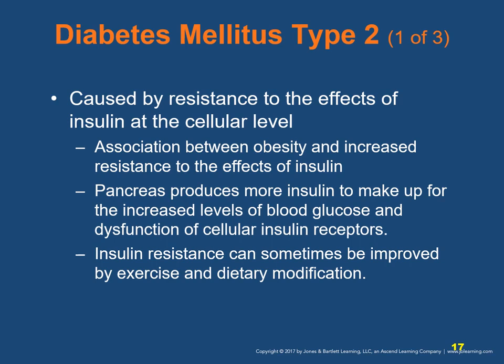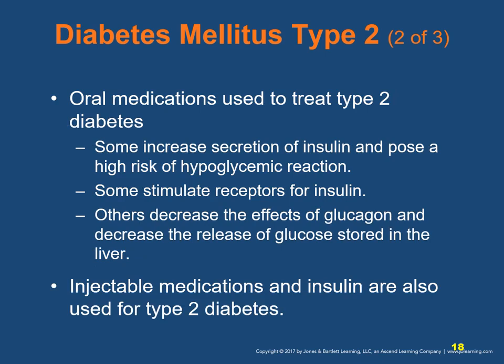Diabetes mellitus type 2 is caused by resistance to the effects of insulin at the cellular level. There is an association between obesity and increased resistance to insulin. The pancreas produces more insulin to make up for the increased blood glucose and dysfunction of cellular insulin receptors, but the response becomes inefficient. Blood glucose levels continue to rise and do not respond when the pancreas secretes insulin — a process called insulin resistance. Insulin resistance can sometimes be improved by exercise and dietary modification.